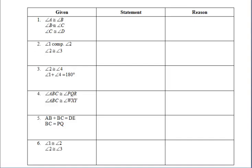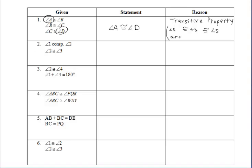Let's take a look at example one. We're given that angle A is congruent to angle B, angle B is congruent to angle C, and angle C is congruent to angle D. The final statement we'd be looking for is that angle A is congruent to angle D. Since angle C is congruent to angle D, we state the final conclusion that A and D are congruent. The reason is the transitive property — we have angles that are congruent to congruent angles, so they are congruent to each other.